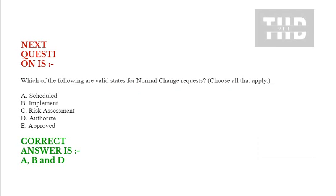Which of the following are valid states for normal change requests? Choose all that apply. Option A: Scheduled. Option B: Implement. Option C: Risk Assessment. Option D: Authorize. Option E: Approved.